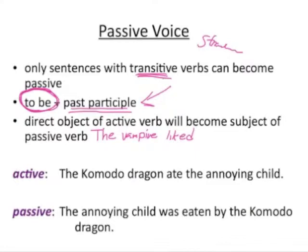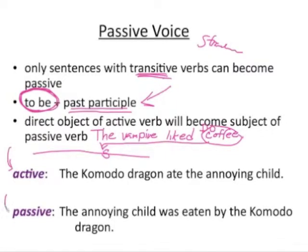For example: 'The vampire likes coffee.' The direct object is 'coffee.' If we put this sentence into the passive voice, 'coffee' comes to the front into the subject position, and it becomes 'The coffee was liked by the vampire.'